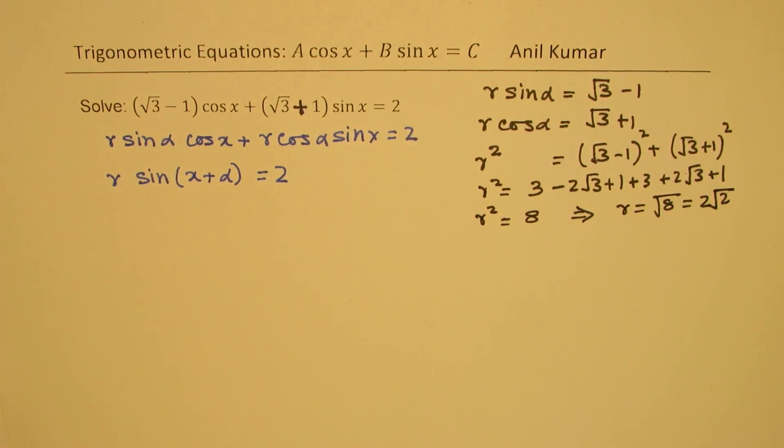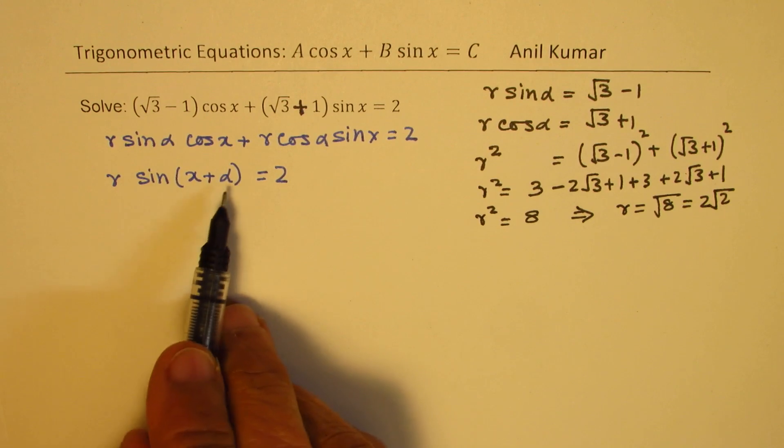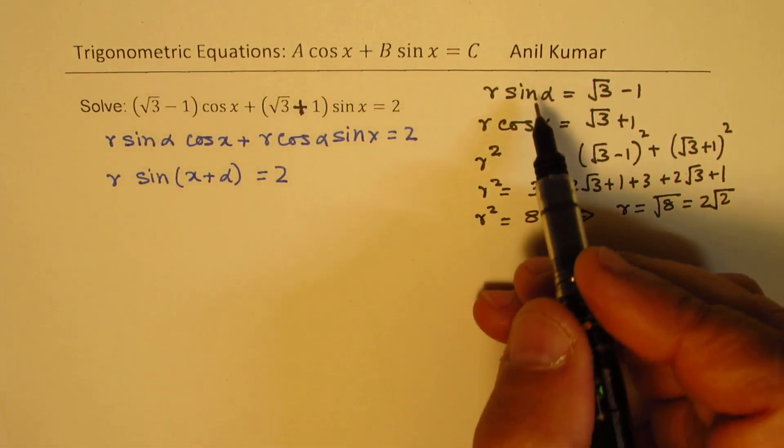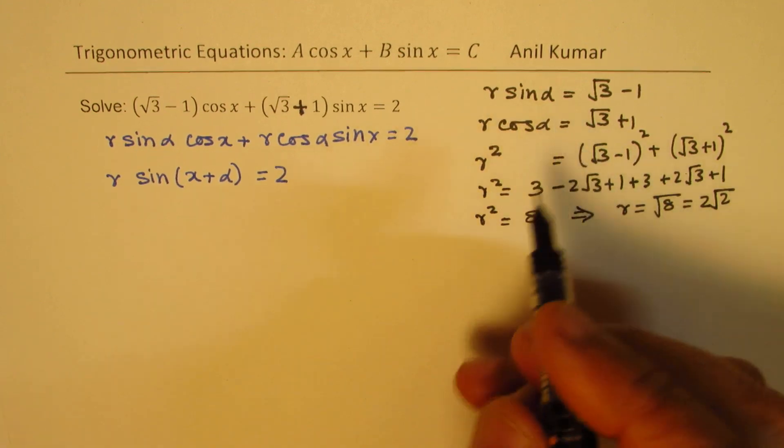So we get the value of r as 2 square root of 2. Now we need to find what the angle alpha is going to be in this particular case. To find the angle alpha, we'll take the ratio.